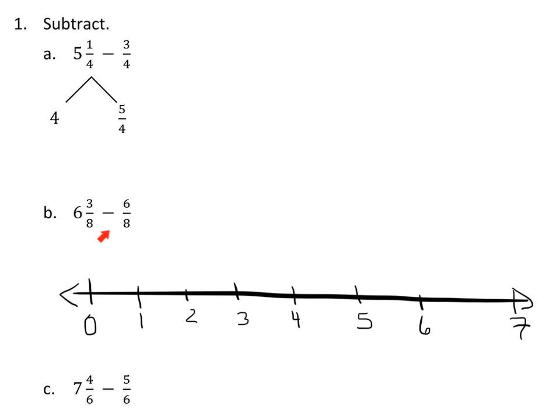On B right here, I've already set up a number line. I want to know the difference, the space between six and three-eighths would be located somewhere over here, and six-eighths, which isn't even eight-eighths yet, it's not a whole, so it's somewhere over here. This space between is their difference.